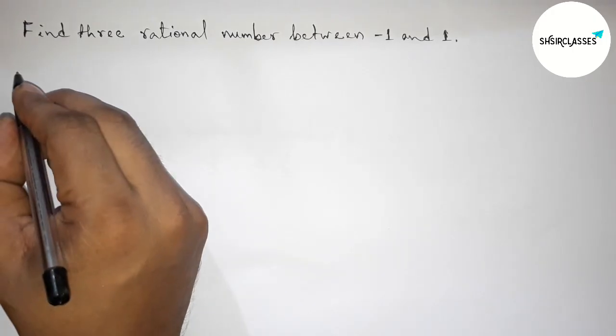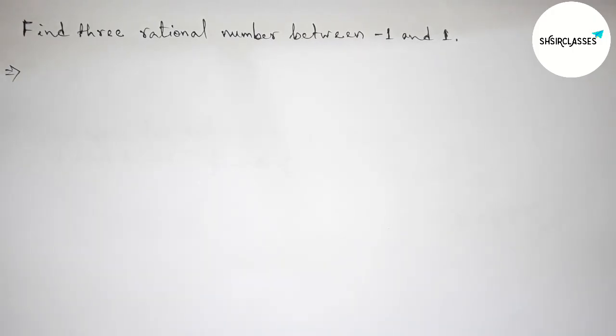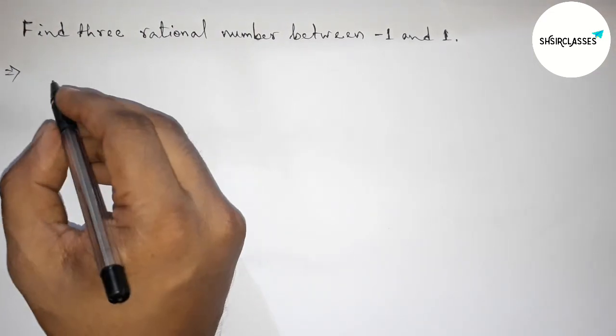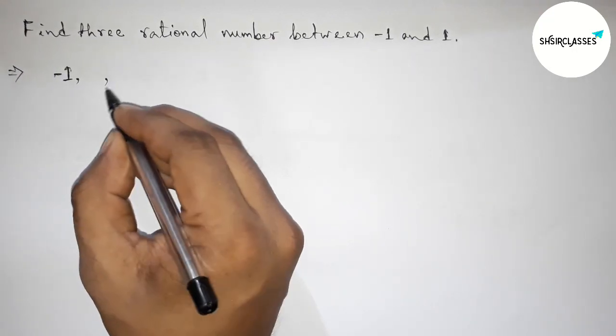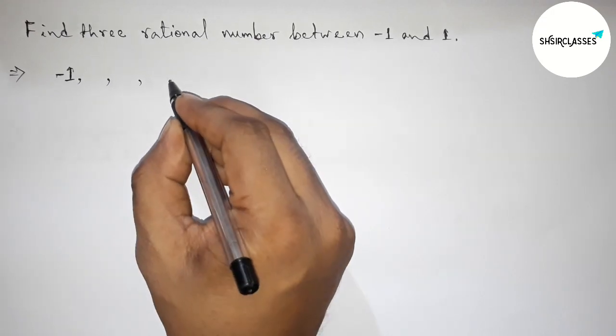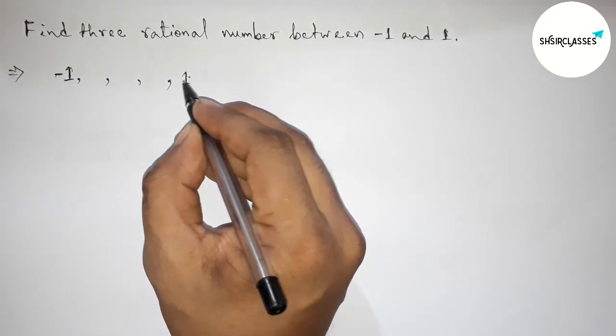First of all, let us solve this problem. Between minus one and one there are infinite numbers of rational numbers, but we have to find only three rational numbers. So first taking three blank spaces to find three rational numbers.